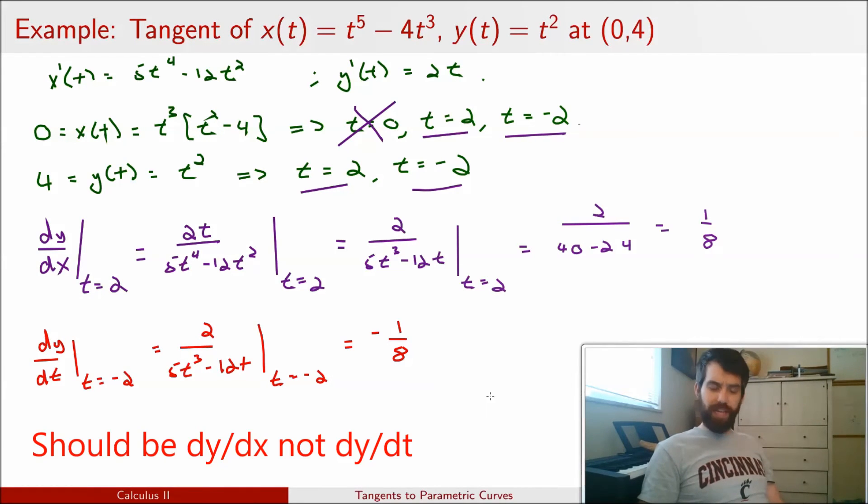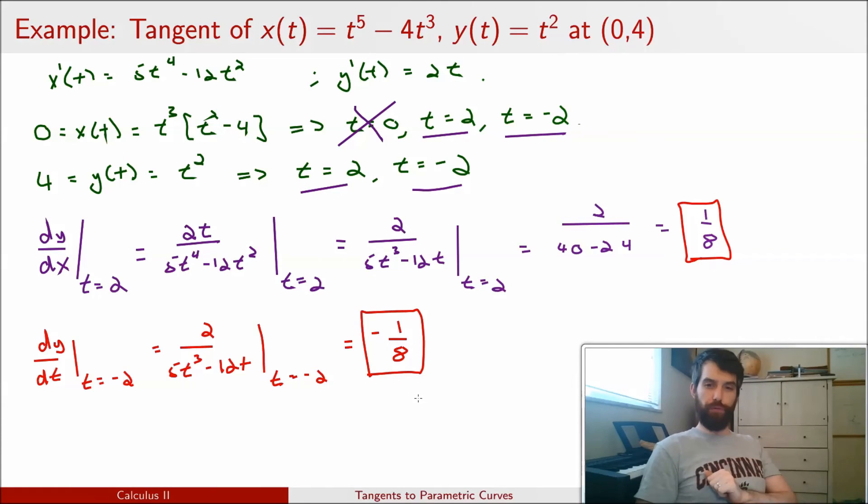And I can repeat the computation for t equal to minus 2, and I get the value minus 1/8, which pairs with the 1/8 that I got from before. So this is kind of interesting. This calculation, dy/dx, tells me the slope at this particular point (0,4). But the slope of this tangent line appears to be two different things. So what is really going on here? It doesn't really make a lot of sense.